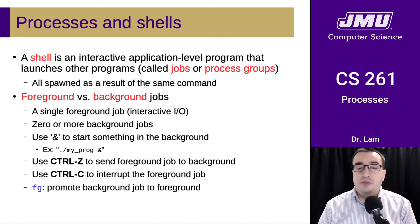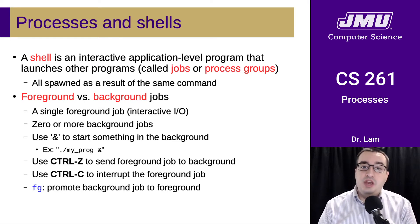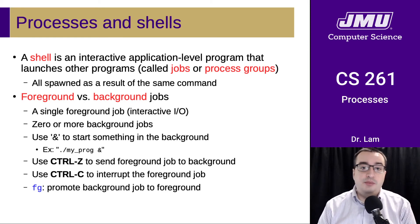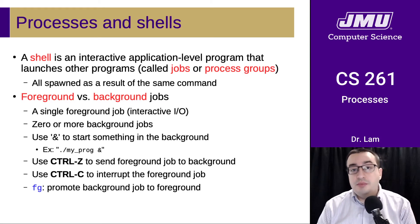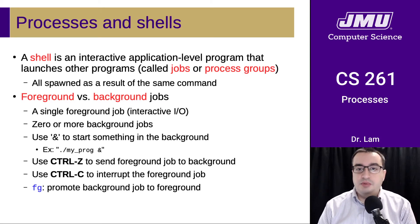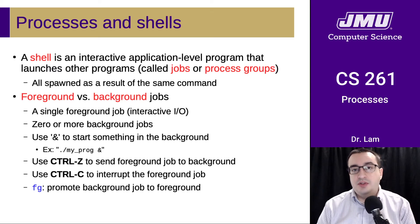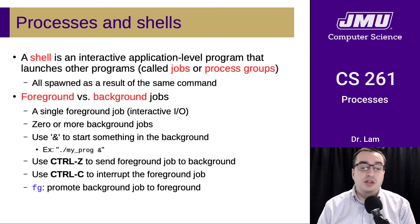The fg command takes whatever you had suspended with Ctrl+Z and makes it a foreground interactive job again. You can also use Ctrl+C to interrupt the foreground job, which you've probably already used to interrupt unresponsive programs or infinite loops.